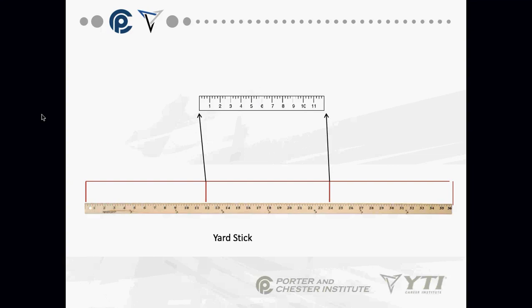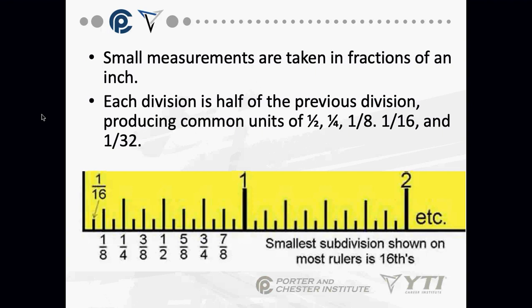A yardstick is three feet. This sounds rudimentary, but in the past ruler quizzes have shown that people cannot figure out where things are on a ruler. When looking within an inch, you can break it down to half, quarter, eighths, and sixteenths. Tape measures typically go down to sixteenths of an inch — knowing how to find these different measurements is important.